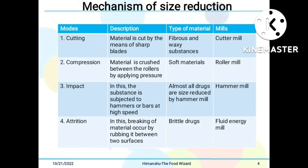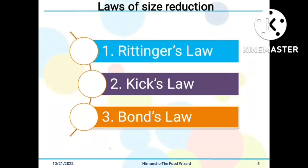The fourth and last mode of size reduction is attrition: breaking of material occurs by rubbing it between two surfaces. The type of material suitable is brittle drugs, and the mill used for attrition is the fluid energy mill.